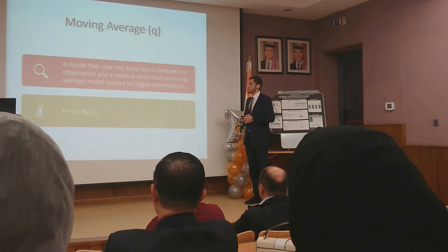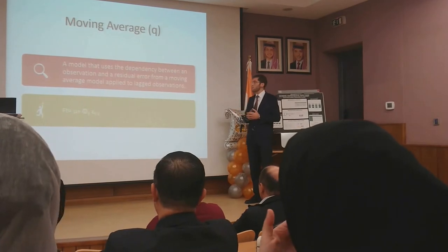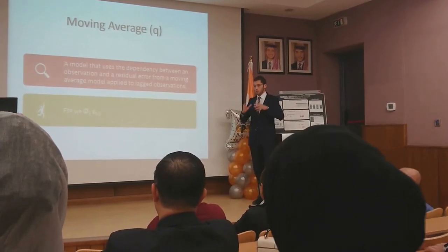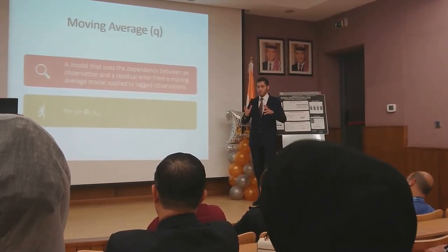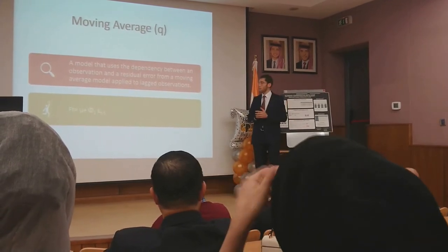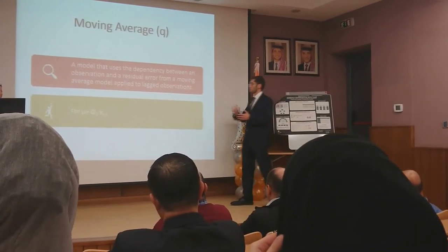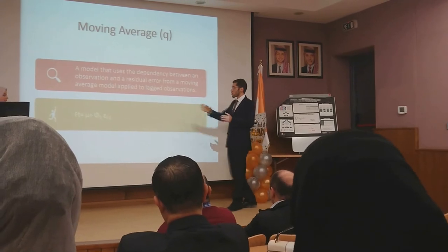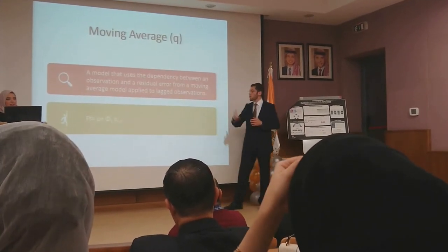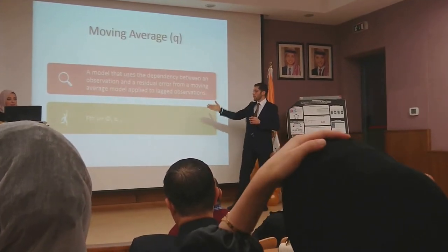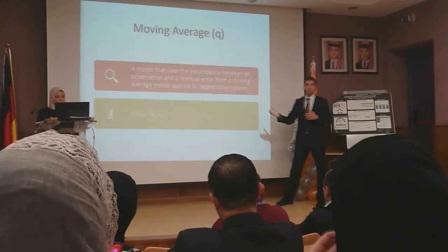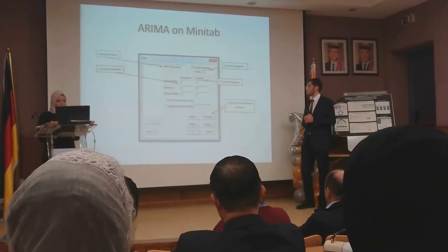Finally, we have Moving Average, denoted by Q. It is when the model relies on the relationship between the current data points and the error from previous ones. The forecast equals the mean plus a multiplicative factor times the error from a previous time point.